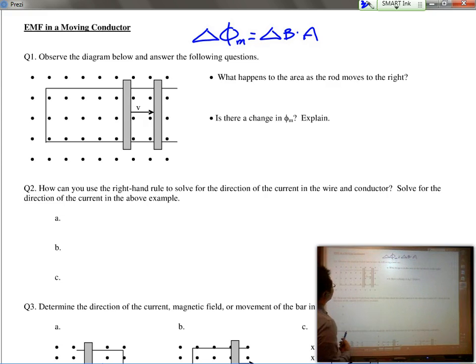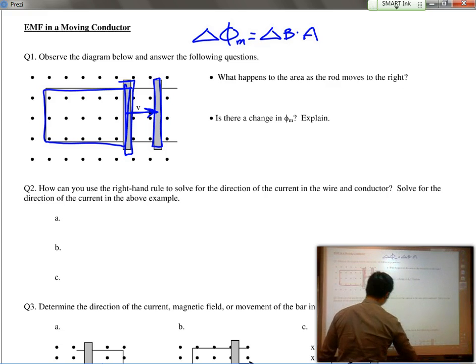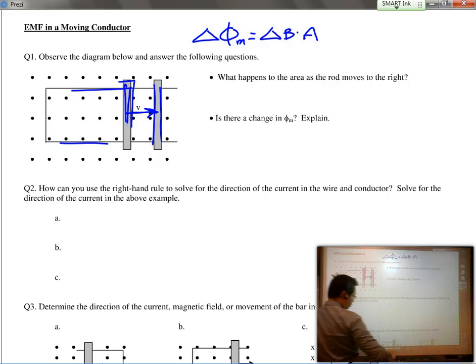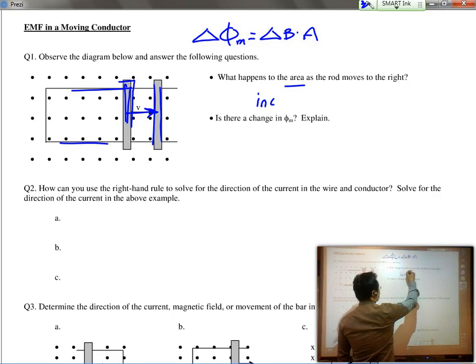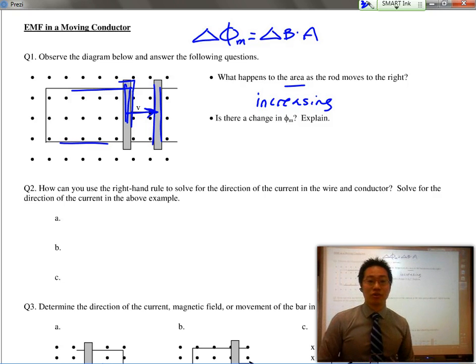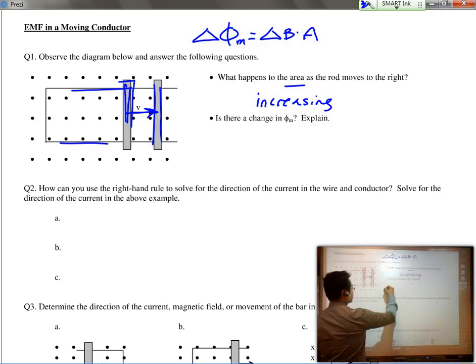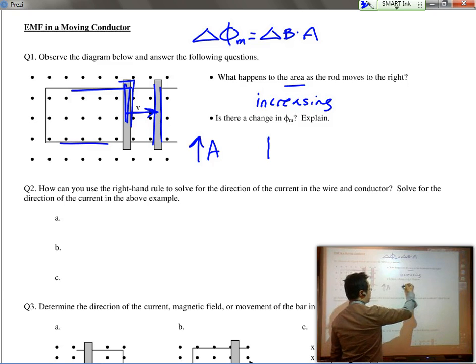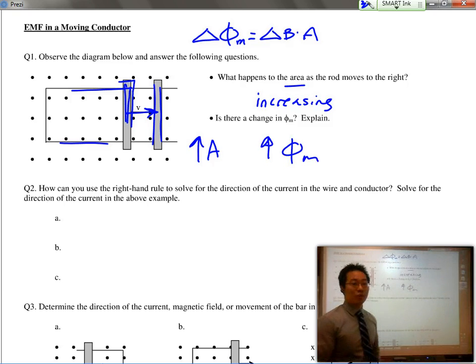We have a moving conductor on rails which is completing a loop. And this rail over here is being slid over to the right, which means that the magnetic flux, overall, the area is increasing as the bar moves over to the right, which means that because there's an increase in area, there's going to be an increase in the magnetic flux as well.